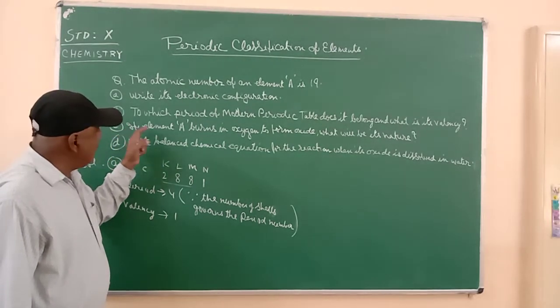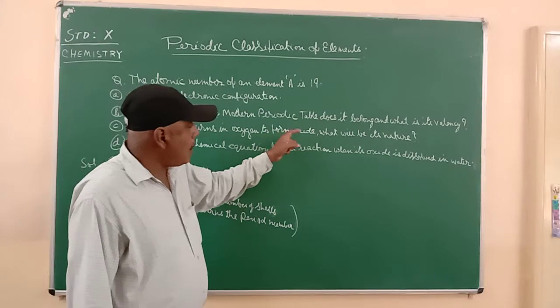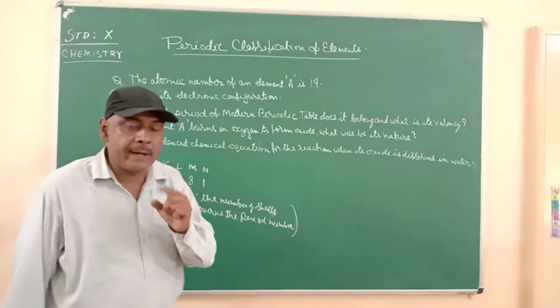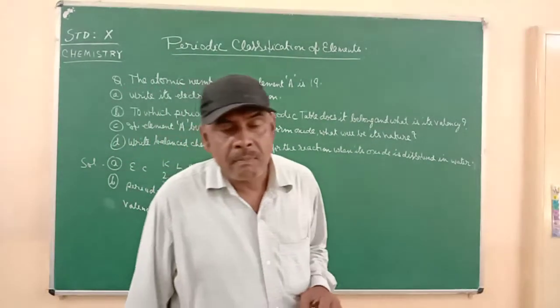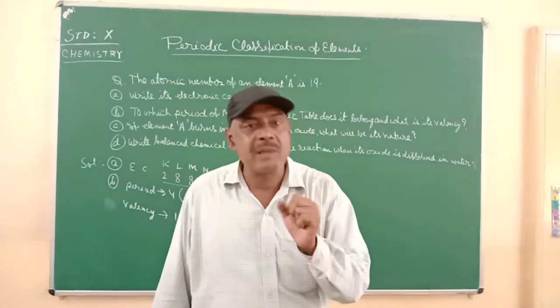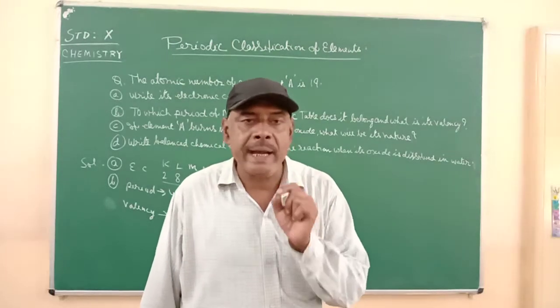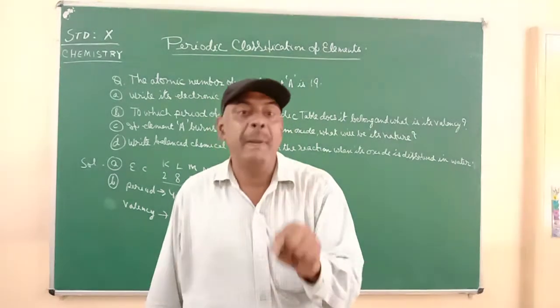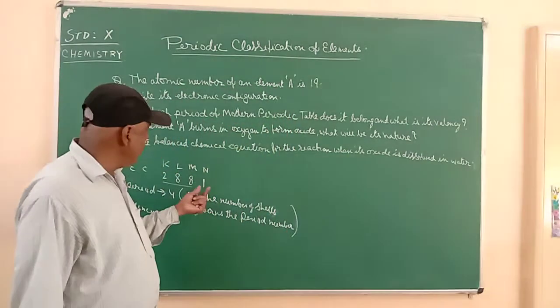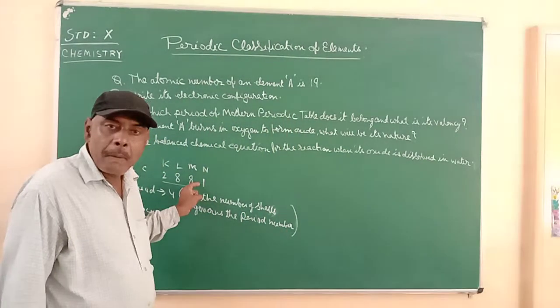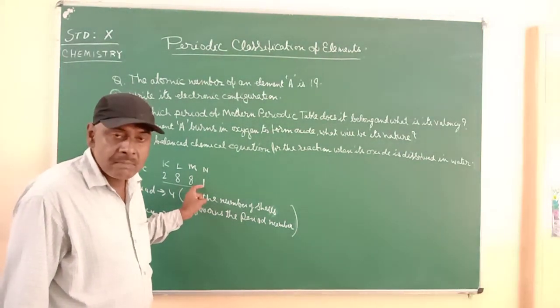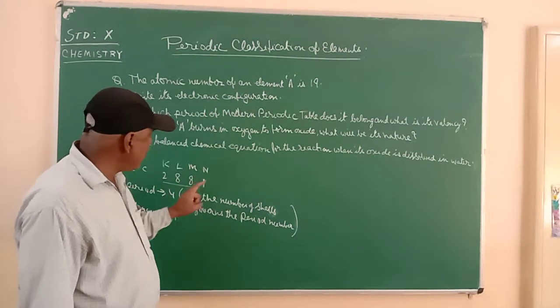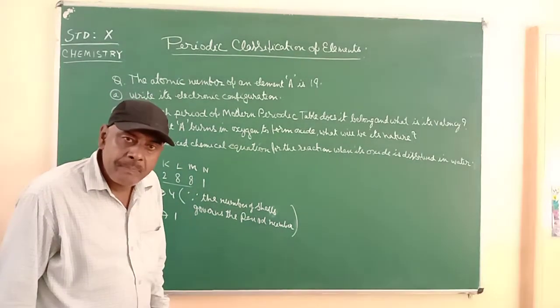If the element A burns in oxygen to form oxide, what will be its nature? We know it has one electron in the outermost shell, that means it is a metal. When metal combines with oxygen, it will form its metallic oxide, and all metallic oxides are basically basic in nature. You have to find out whether the given element is metal or non-metal from the given electronic configuration. Metals have one, two, and three electrons in the outermost shell. This element A is also having one electron in the outermost shell, so it can be considered as a metal.